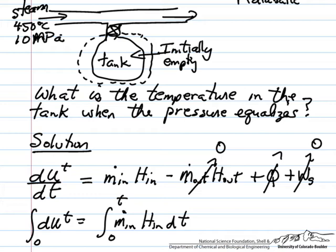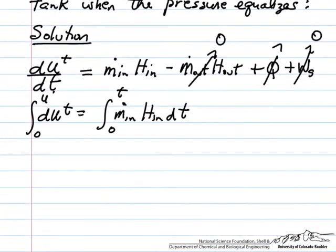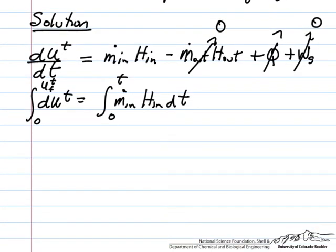Where initially the tank is empty, so the internal energy is 0, until the total final internal energy. So the left side is just the internal energy final in the system.